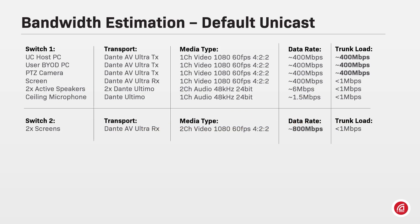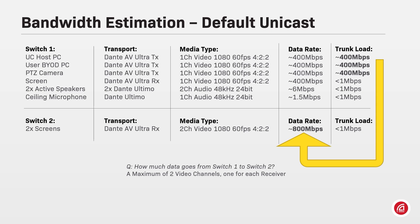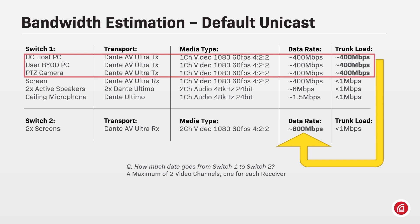To answer these questions, let's take a look at the data rates of all our equipment and understand what goes where. Considering the default unicast behavior of all Dante media flows, audio and video will be sent exclusively to the subscribed receiver. Therefore, we can check how much data goes from switch 1 to switch 2 to verify one direction of the trunk line load. From switch 1, a maximum of two video channels can go to the screens connected to Dante AV Ultra receivers on switch 2. Please note that there are three Dante AV Ultra transmitters on switch 1: the UC host PC, the user bring-your-own-device PC, and the PTZ camera.